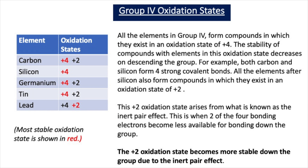Carbon can have a plus 4 oxidation state, which is the most stable and most common, and a plus 2 oxidation state which is much less common — for example, carbon in carbon monoxide. Silicon can only exhibit a plus 4 oxidation state. Germanium can exhibit a plus 4, which is the most stable, and occasionally a plus 2. Tin can exhibit plus 4 and plus 2, with plus 4 being the most stable. Lead can exhibit plus 4 and plus 2; however, in lead the plus 2 oxidation state is the most stable.